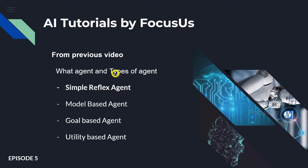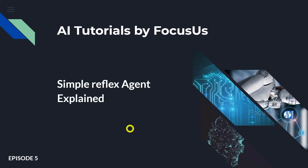We learned what an agent is and the types of agents. To quickly remind you, there were four types of agents: simple reflex agent, model-based agent, goal-based agent, and utility-based agent. So in this episode we're going to learn about simple reflex agents in detail.